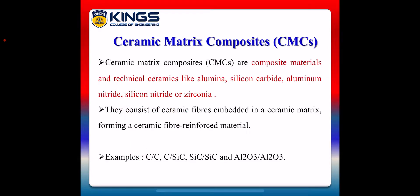Next, we see about the third type of composite: ceramic matrix composites, simply called CMCs. Ceramic matrix composites are composite materials with technical ceramics like alumina, silicon carbide, aluminum nitride, silicon nitride, or zirconia. They consist of ceramic fibers embedded in a ceramic matrix, forming a ceramic fiber reinforced material. Important examples include carbon-carbon CMC, carbon-silicon carbide CMC, silicon carbide-silicon carbide CMC, and Al2O3-Al2O3 (aluminum oxide) CMCs.